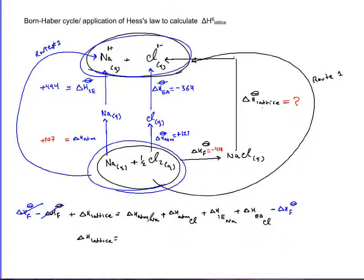Delta H atomization of sodium is given to us, 107. You cannot find it in your data booklet. Delta H atomization of chlorine was half the bond enthalpy, you have to find it. Delta H electron ionization energy of sodium, you find it in table 7.